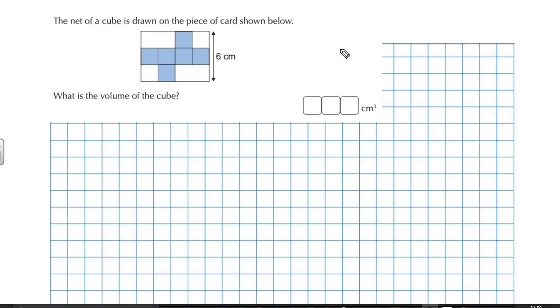Okay, the net of a cube is drawn on the piece of card shown below, and this question asks us, what is the volume of the cube? Now, a net is something where if you imagine cutting this out, imagine this is a whole piece of card, we're cutting it out, we could fold it up to make a cube, a three-dimensional cube shape.